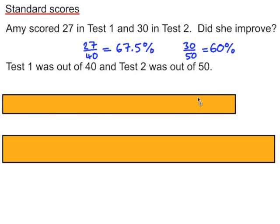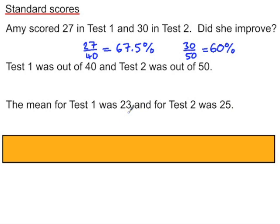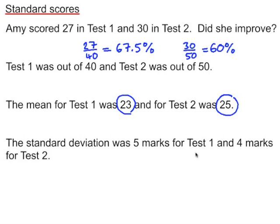The class mean for test 1 was 23 and for test 2 was 25. So Amy's scores were above the mean each time, but we need to know how much above the mean. The standard deviation for test 1 was 5 marks and for test 2 it was 4 marks.